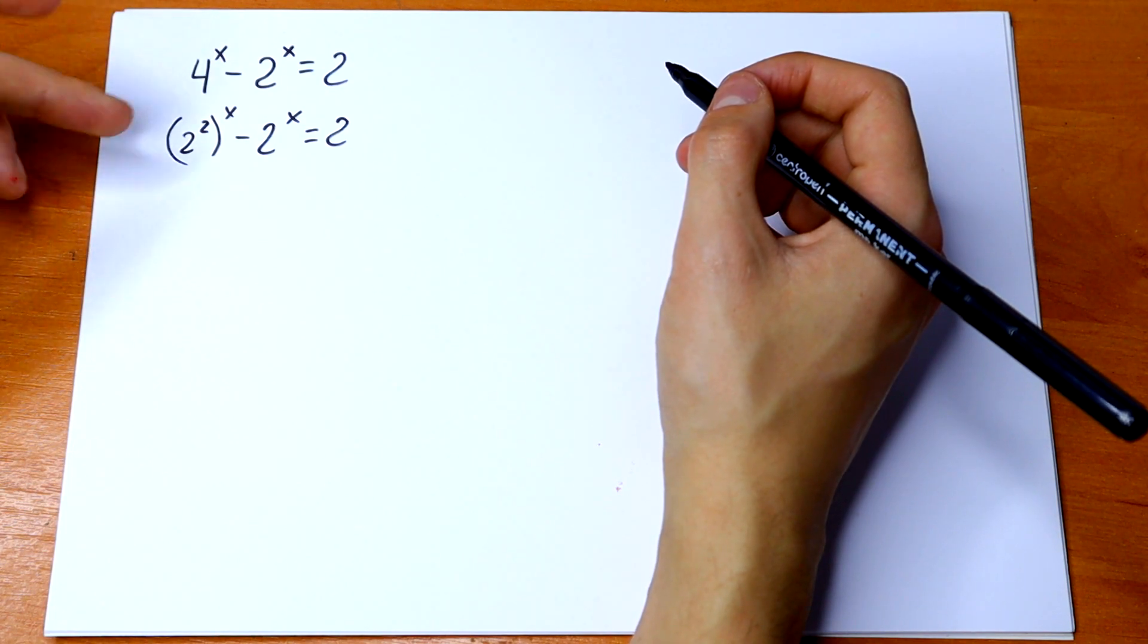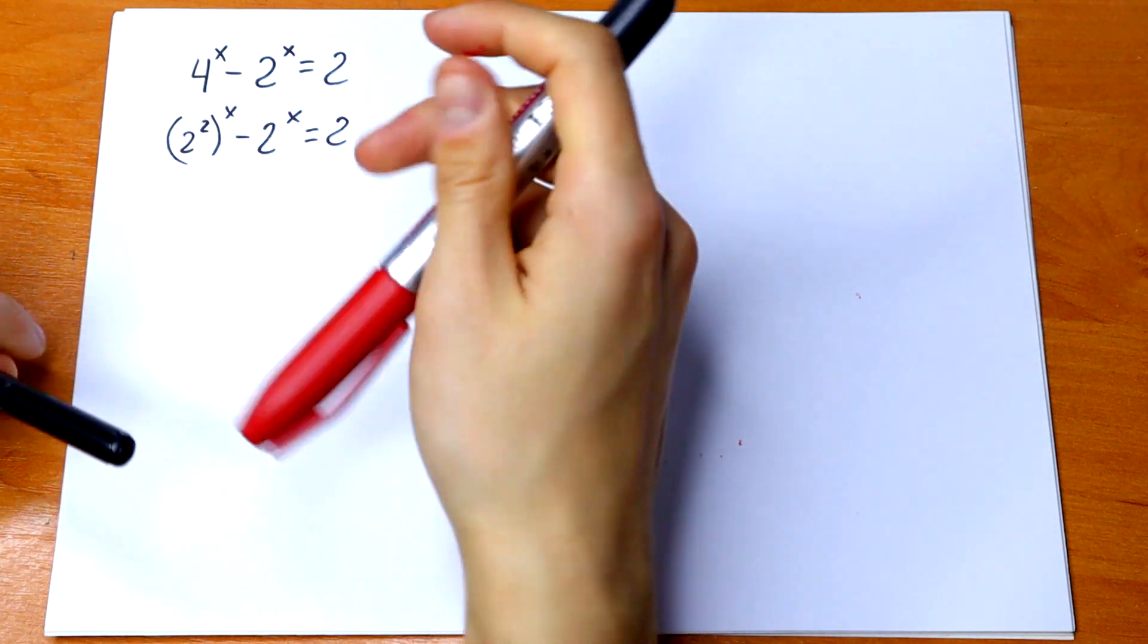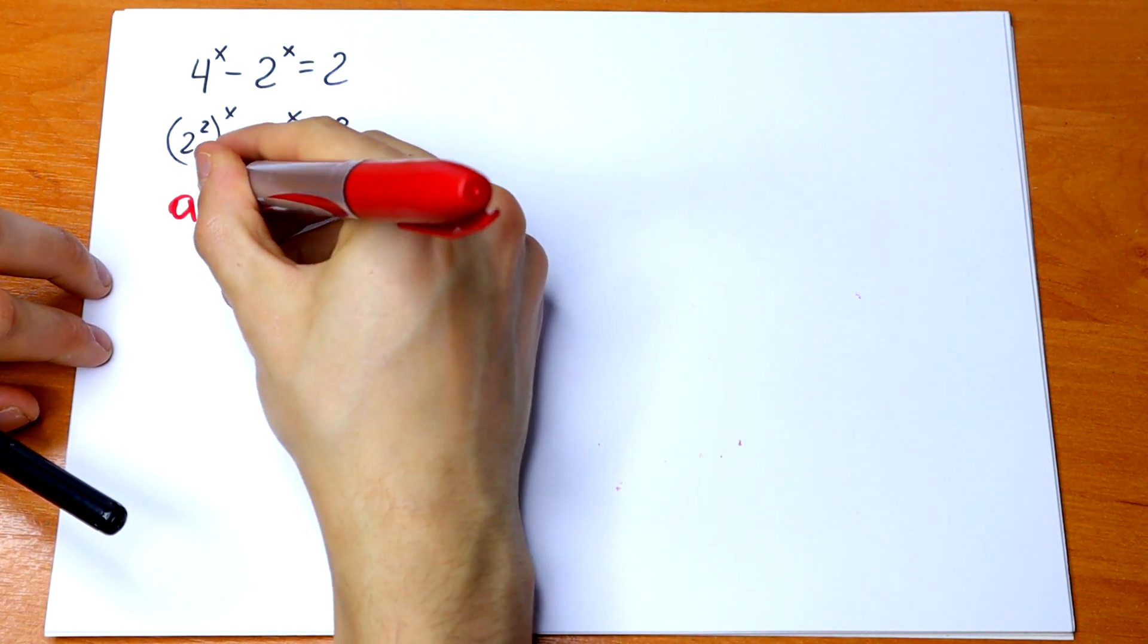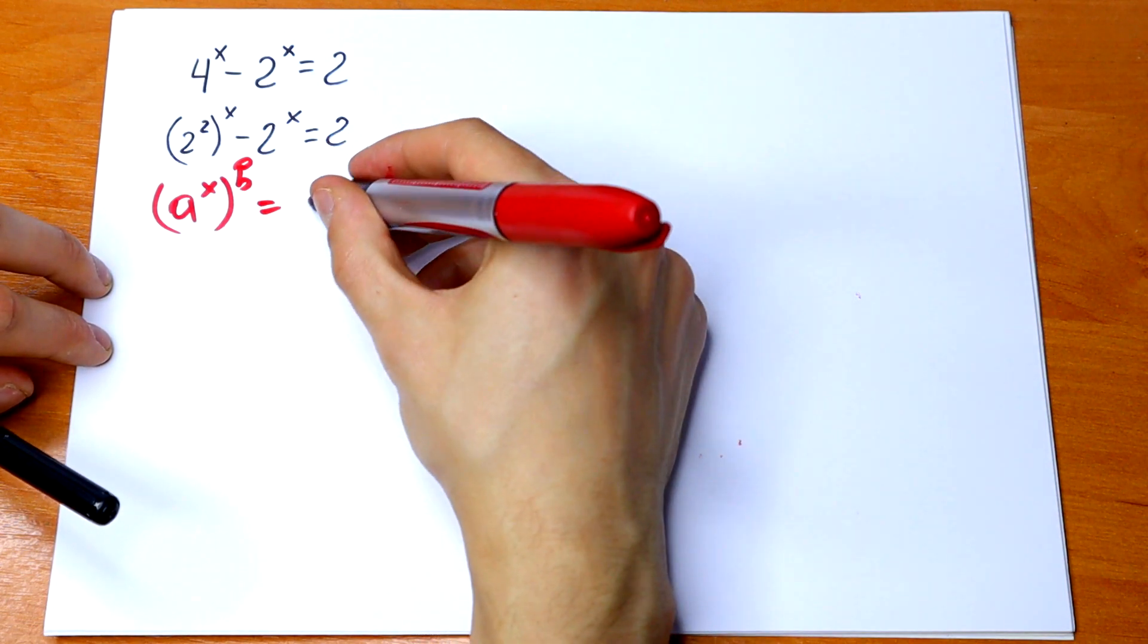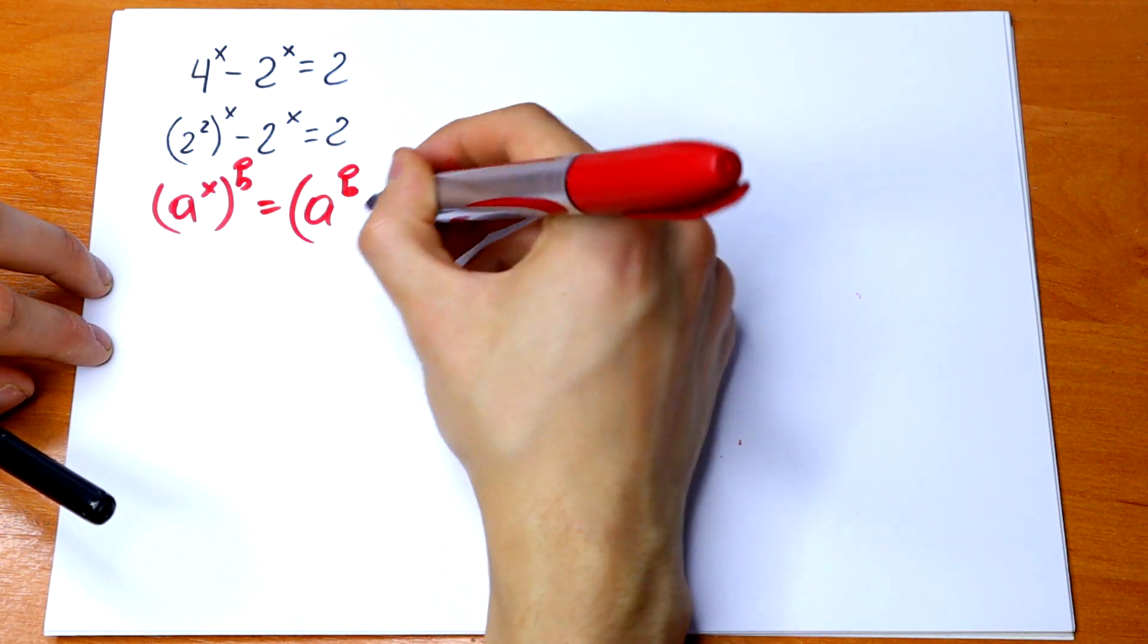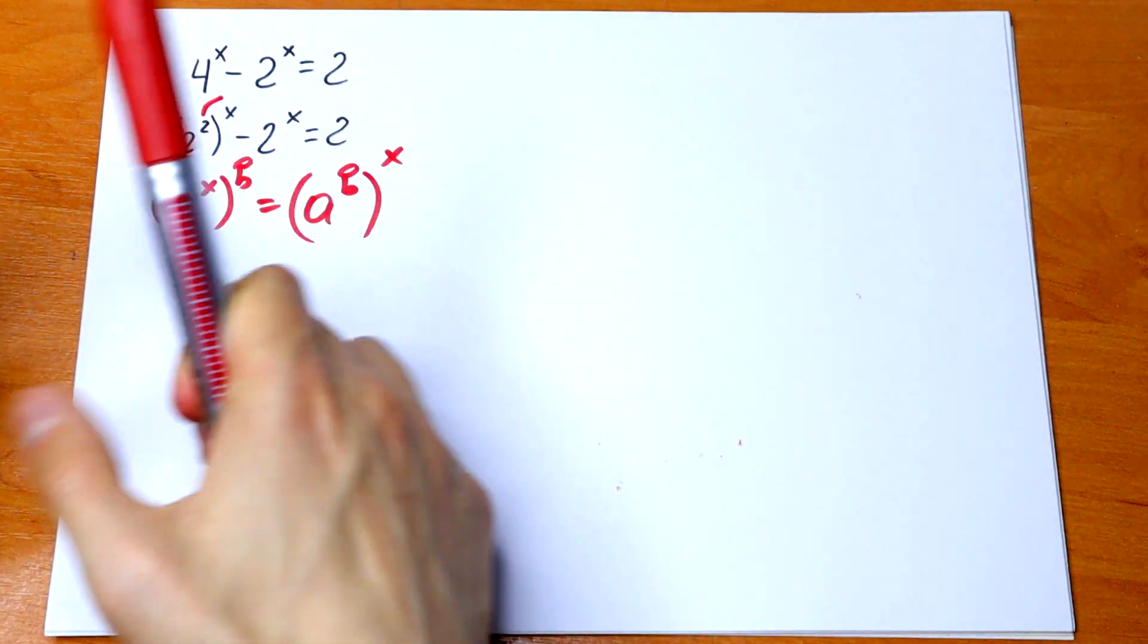The next rule I'll use is the rule of interchange. If we have (a^x)^b, we can write it as (a^b)^x. We can swap these exponents.